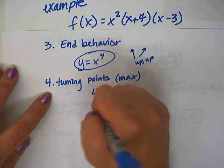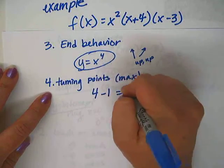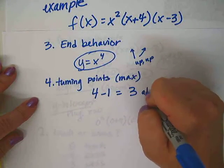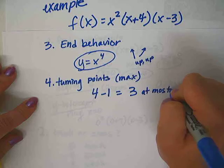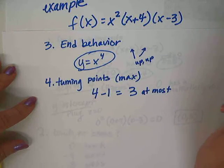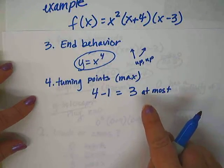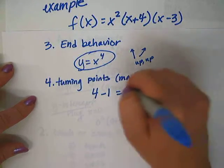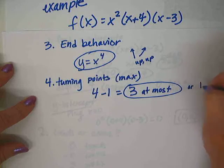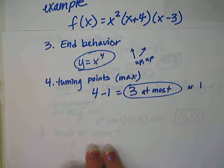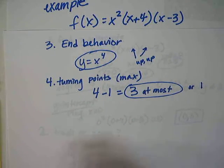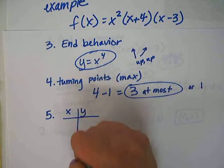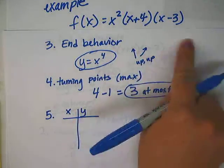The maximum number of turning points comes from taking the degree, which is 4, and subtracting 1. So there might be at most 3 turning points, or there could just be 1. There will never be 2 or 0 for a degree 4 polynomial — it will either be 3 or 1, but we don't know yet.